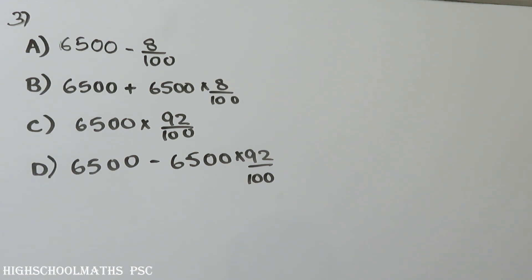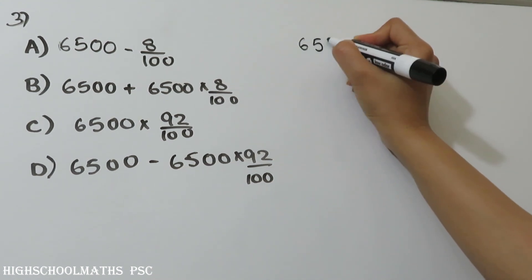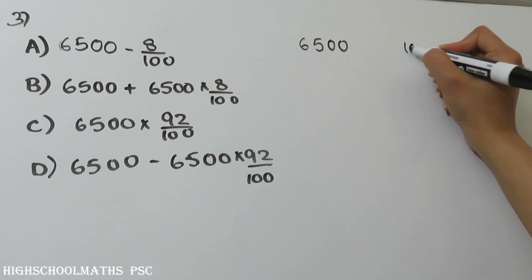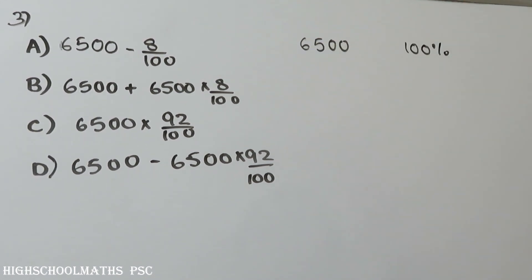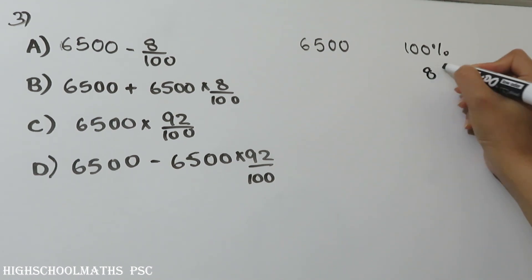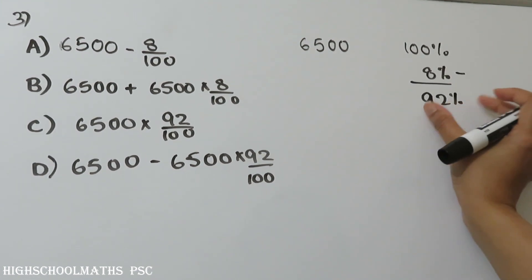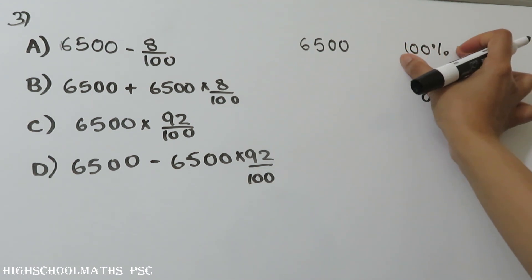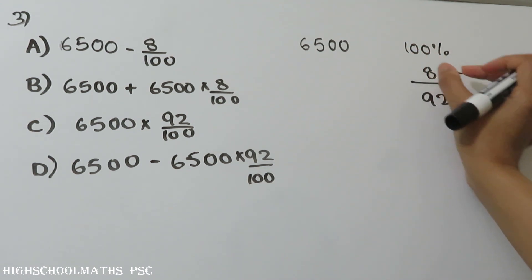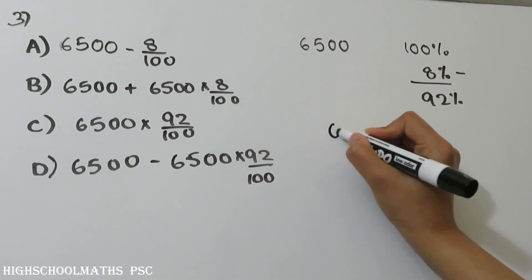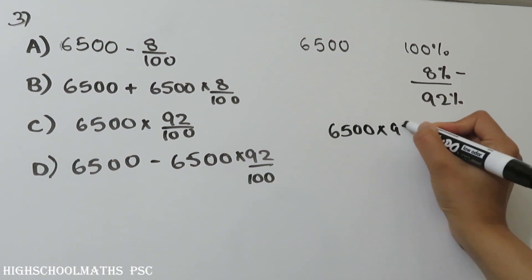How do we represent this? The price of a bicycle is Rs. 6500. When the price decreases by 8%, the new price is represented as Rs. 6500 minus 8% of Rs. 6500, which is Rs. 6500 minus (8 by 100) of 6500.